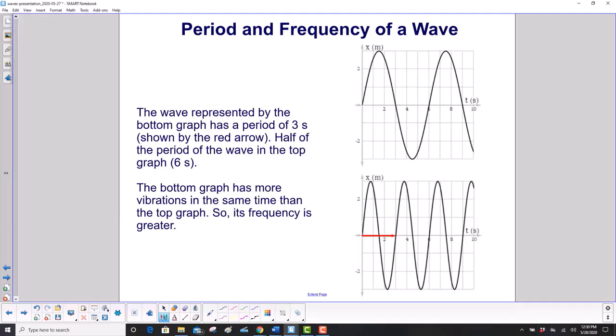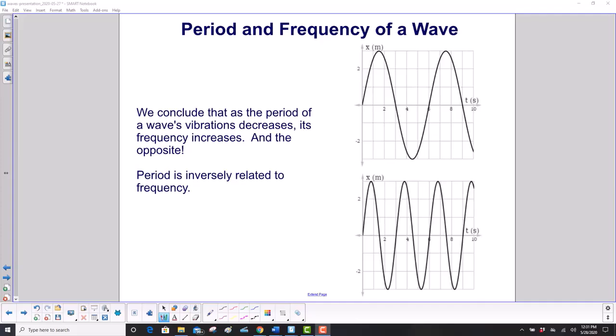The wave represented by the bottom graph has a period of three seconds: up, all the way down, and then back up to the equilibrium position, and that is three seconds. That is half the period of the wave on top. The bottom graph has more vibrations in the same time than the top graph. So its frequency is going to be greater. If we look at six seconds here, bring it down to this point here, we can see we have two complete vibrations.